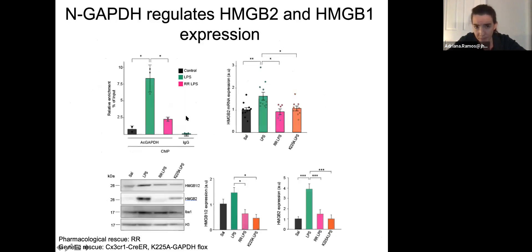First I tested that the results of my ChIP-seq were true through different techniques. I did a qPCR to test that the binding of nuclear GAPDH to the promoter of HMGB2 was actually true. As well, I tested that this binding was functional and that it is actually regulating HMGB proteins at mRNA and as well at protein level.